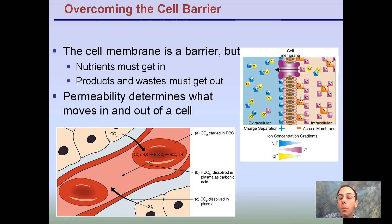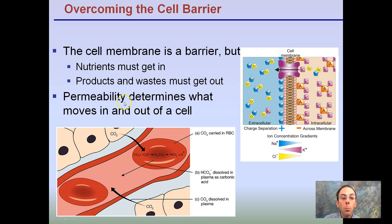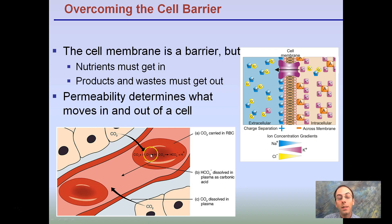First, overcoming the cell barrier. The cell membrane is a barrier, but nutrients have to get into the cell because the cell needs those to survive, and products and waste must get out. So while this is a barrier, it can't be completely solid — it has to be exchanging certain things. Permeability determines what moves in and out of the cell. Here we have our red blood cells with CO2 coming in and then transported through. CO2 will then have to leave the cells. This membrane is allowing certain things to come in but also needs to allow things to go out.